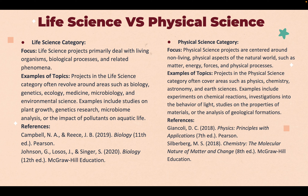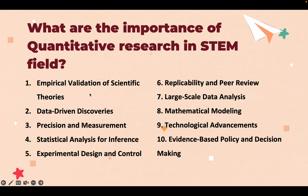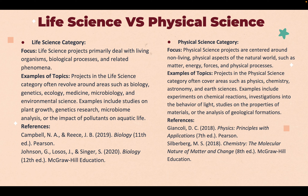Life science category projects primarily deal with living organisms, biological processes, and related phenomena — for example, biology, genetics, ecology, medicine, microbiome, and environmental science. Examples include studies on plant growth, genetic research, microbiome analysis, or the impacts of pollutants on aquatic life. There are living, biotic organisms affected by your research.